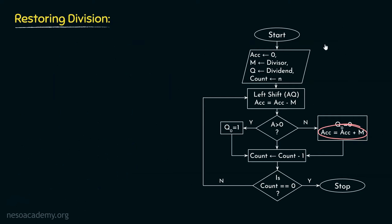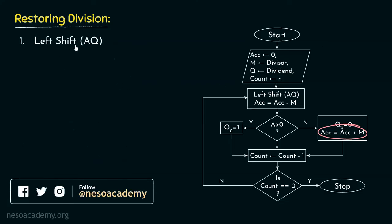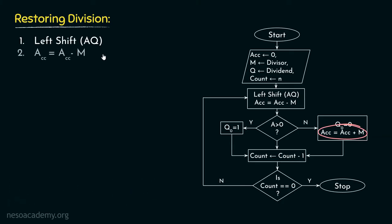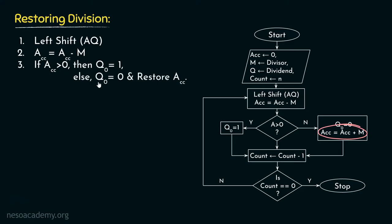After the initializations, we are performing the left shift of the contents of AQ — that is the register pair of accumulator and Q register. Basically, instead of shifting the divisor, we are now shifting the dividend towards the left. Now after the left shift of AQ, we are performing the subtraction. And finally, if the result of the accumulator is positive, then we set Q0 to 1. Otherwise, we set Q0 to 0 and restore the accumulator's content. These are the main three steps involved in restoring division. However, if we alter the sequence of these operations, we can actually get rid of this restoration procedure.